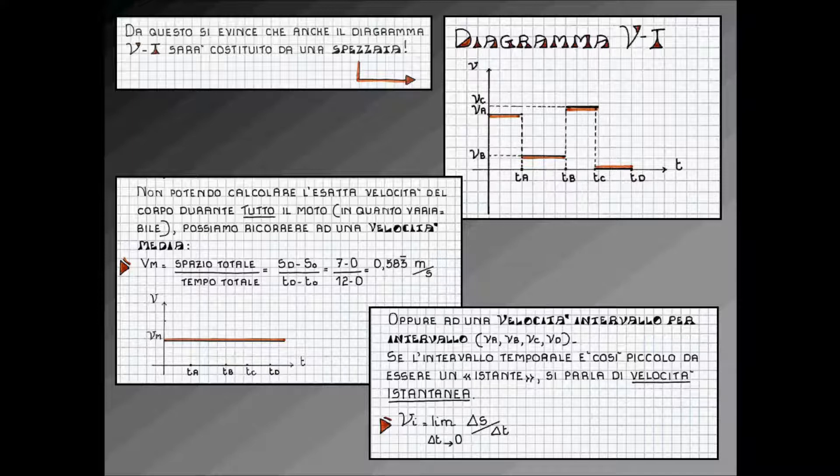Se l'intervallo temporale è così piccolo da essere un istante, ovvero ΔT così piccolo da essere quasi zero, si parla di velocità istantanea. La velocità istantanea viene indicata con il simbolo V e viene definita come il limite per ΔT che tende a zero del rapporto fra ΔS e ΔT.